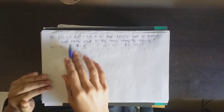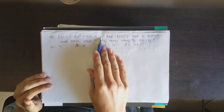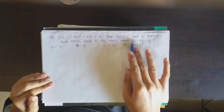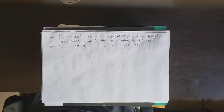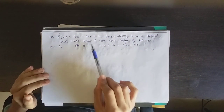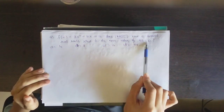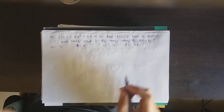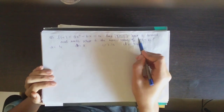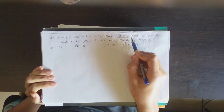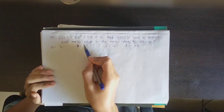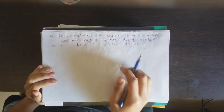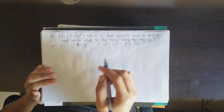F of x is equal to ax squared minus bx minus 16. It's given that it does not have two distinct real roots, and they're asking what is the maximum value of 4a minus b. So first let's understand what this means — it does not have two distinct real roots, so its discriminant either must be less than 0 or must be equal to 0.